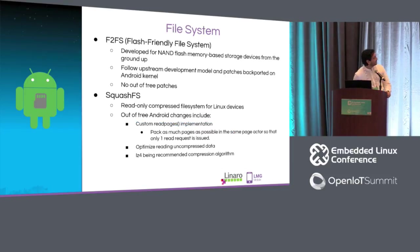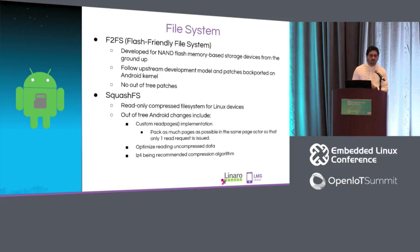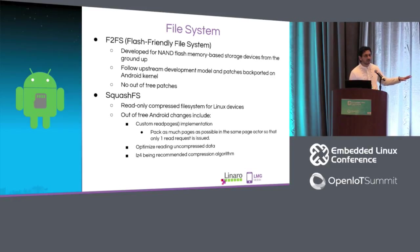Next up is F2FS — there is no out-of-tree delta here; the few chunks of code present are all upstream, so nothing to worry about. SquashFS does have a few patches claiming to be optimizations, which are fairly new, and I have not seen any upstream activity on those patches.